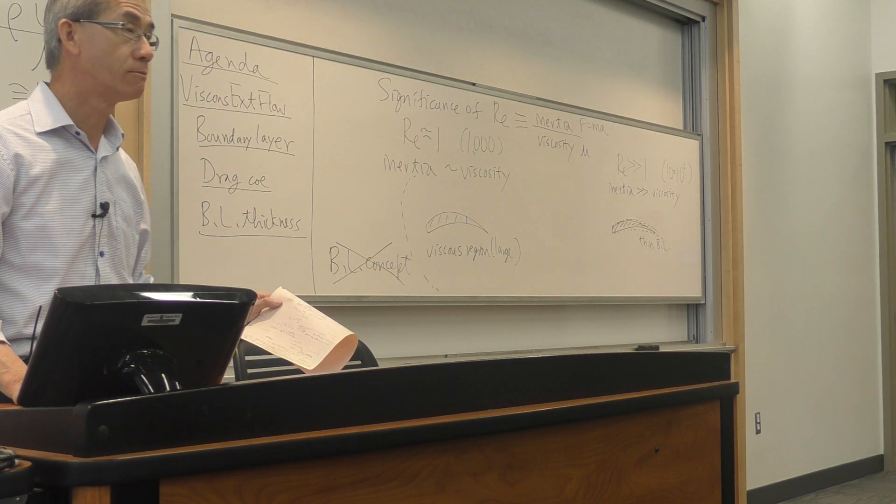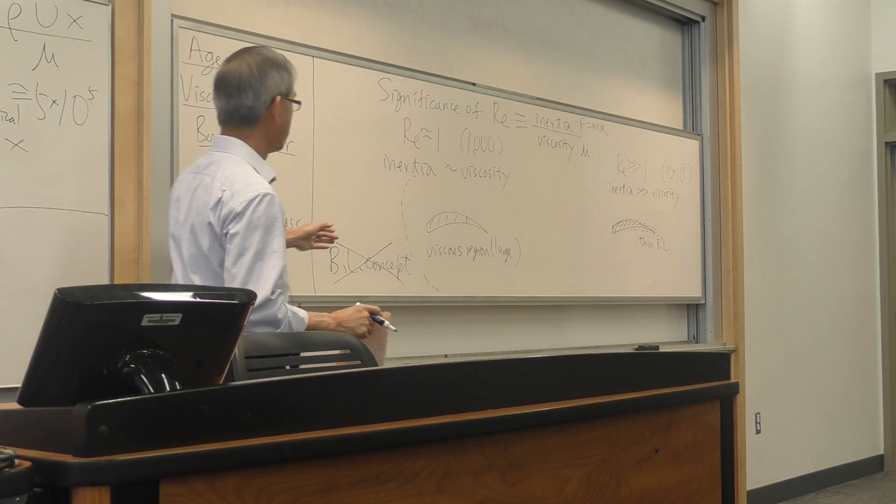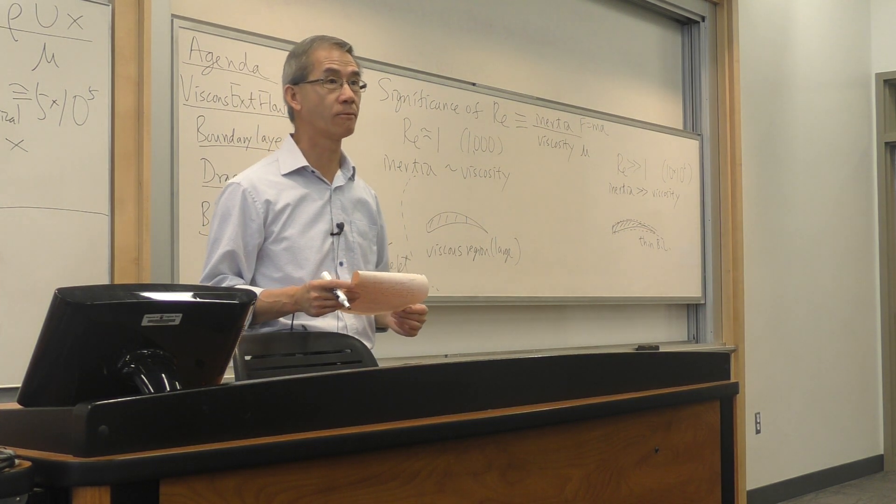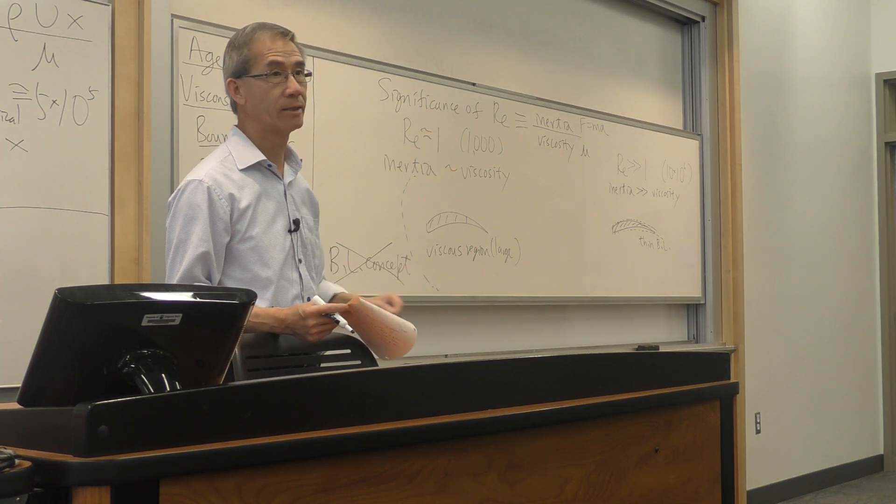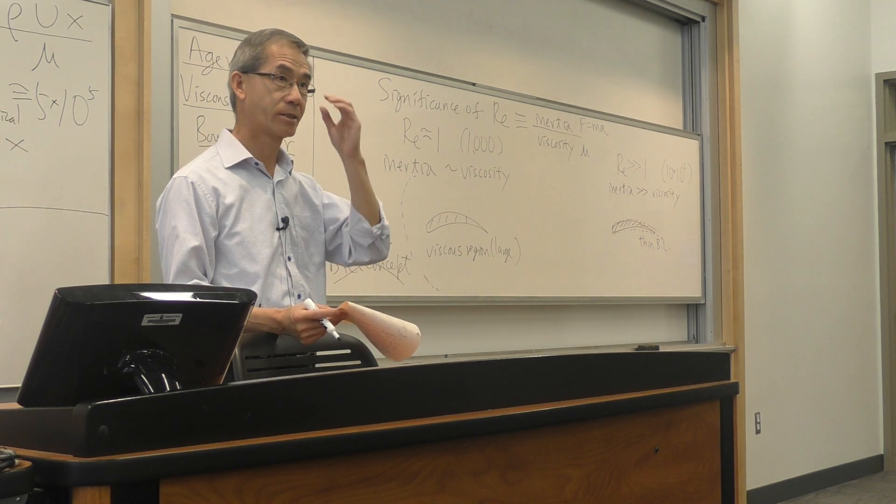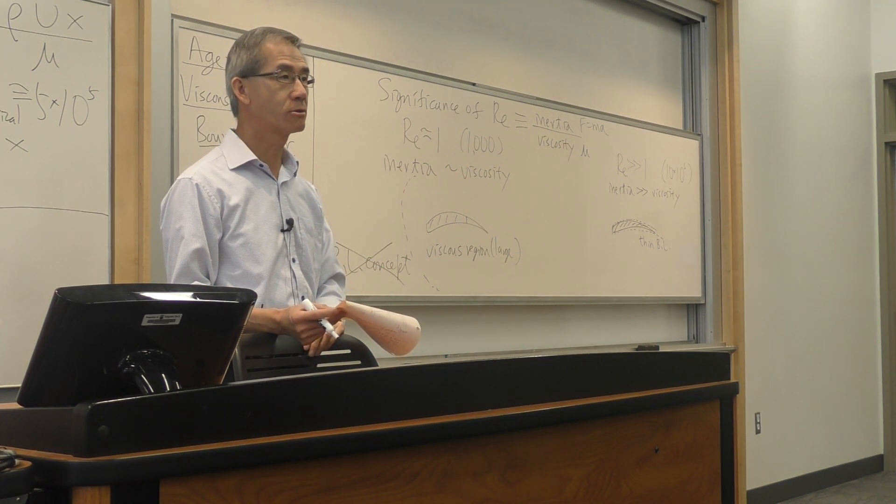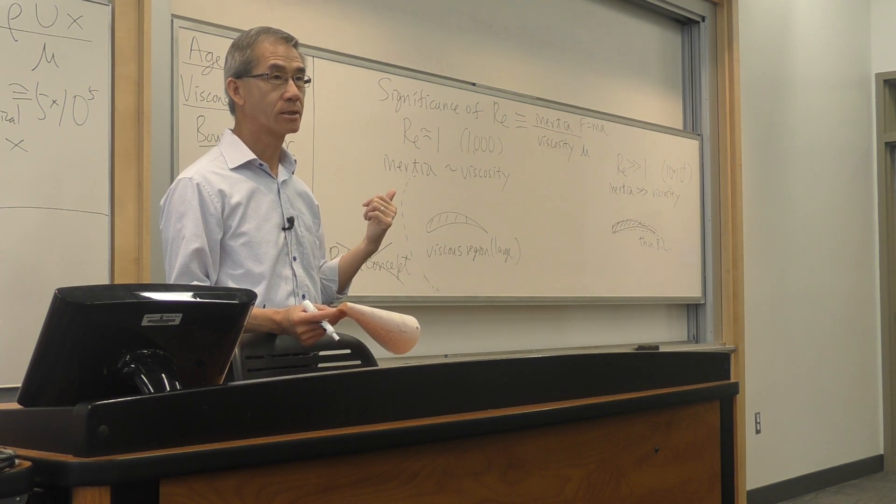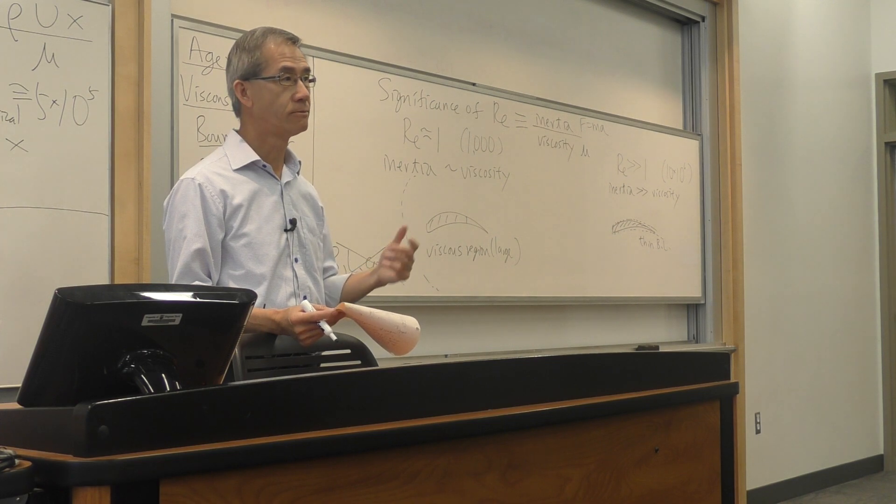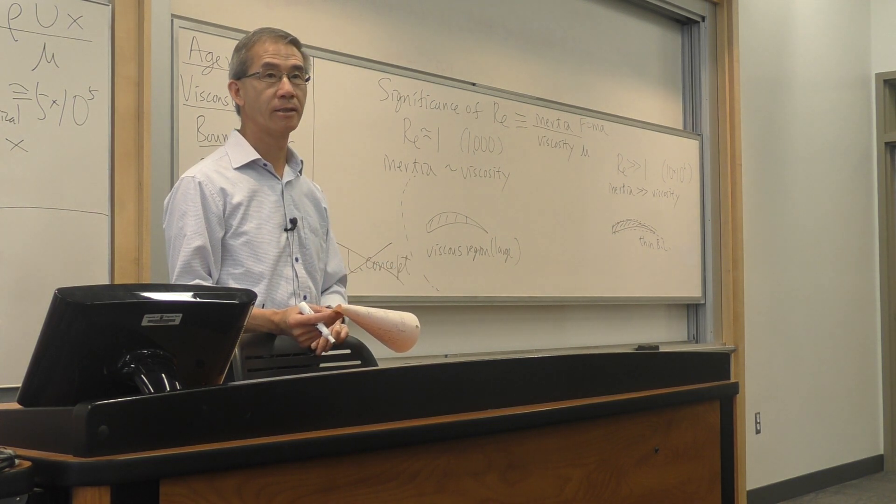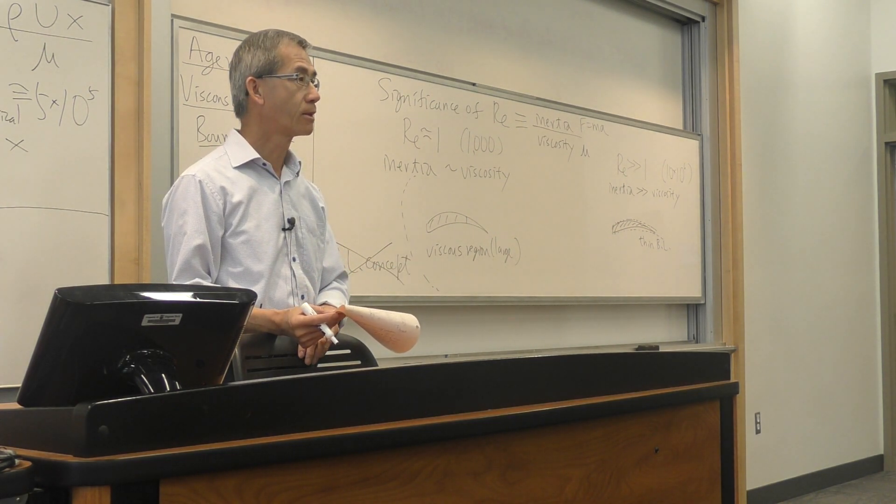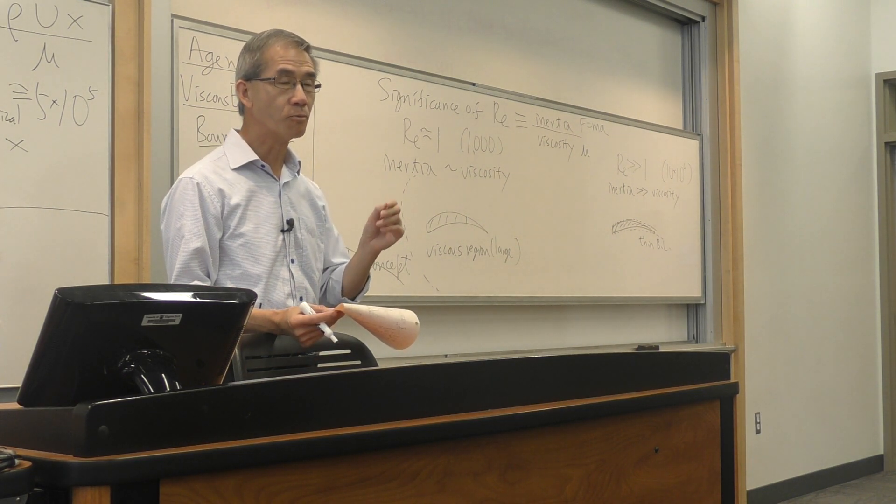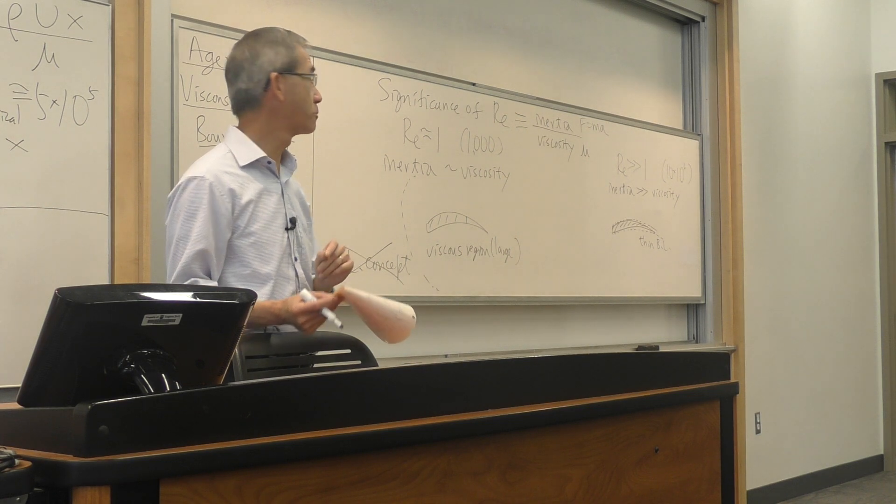The only way you can solve for the flow field here is consider viscous effect everywhere. And that becomes, obviously, a more challenging problem. Fortunately, for most engineering problems, we are on the right side domain, Reynolds number is high. But there are a few cases, and it's getting more and more interesting in the military application, where Reynolds number is going to be very, very small. Can you first tell me an everyday life example of something that will have a very, very small Reynolds number?